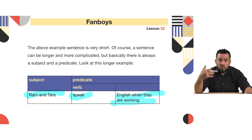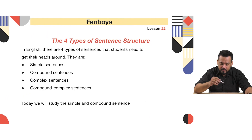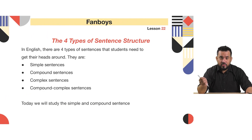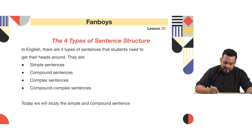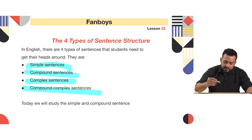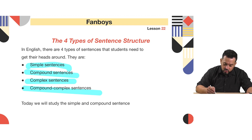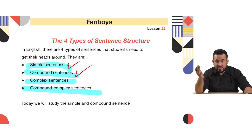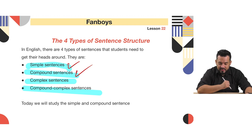There are four types of sentences in the English language: the simple sentence, the compound sentence, the complex sentence, and the compound-complex sentence. Today we are just going to talk about the first two — the simple sentence and the compound sentence.